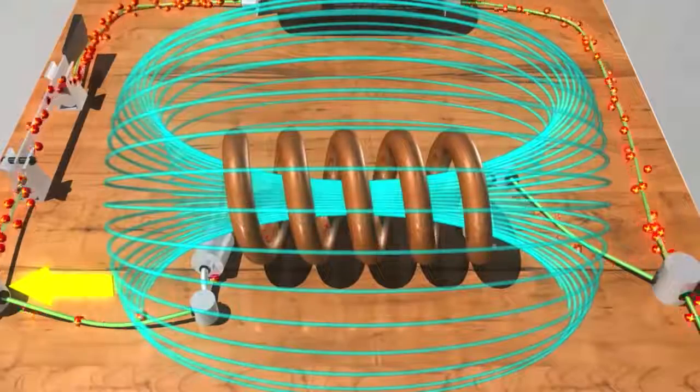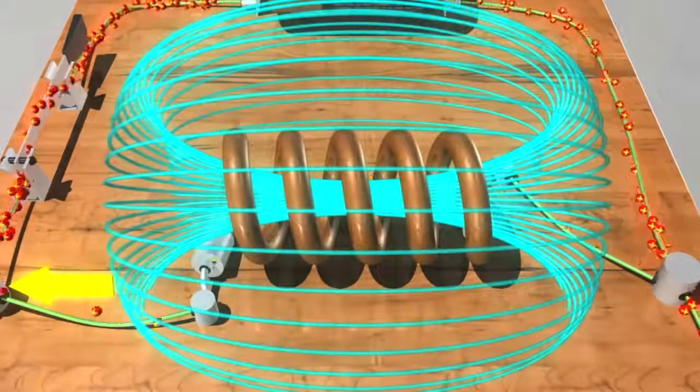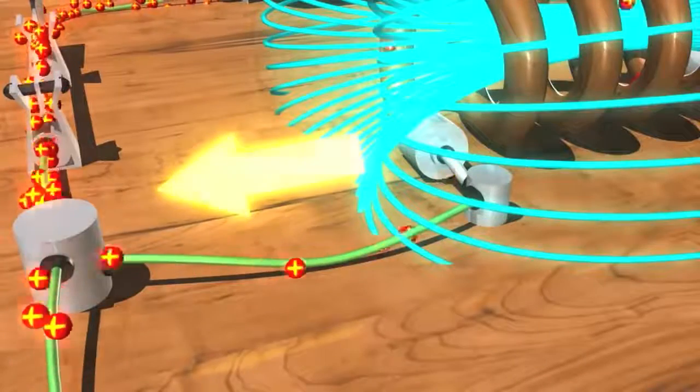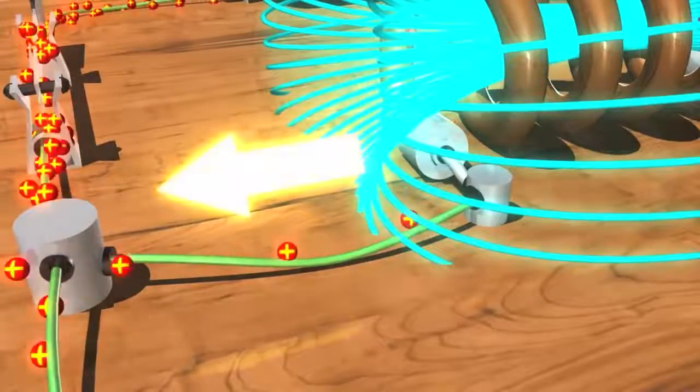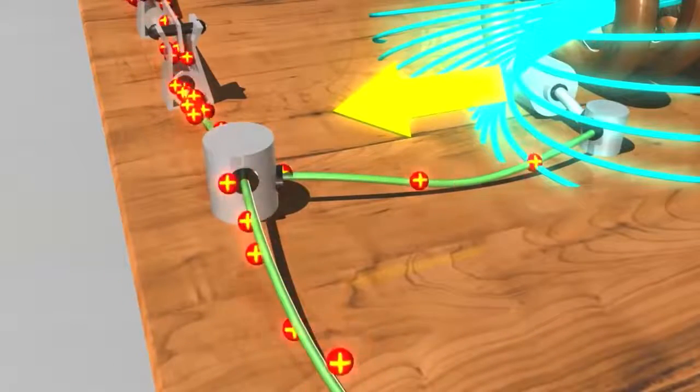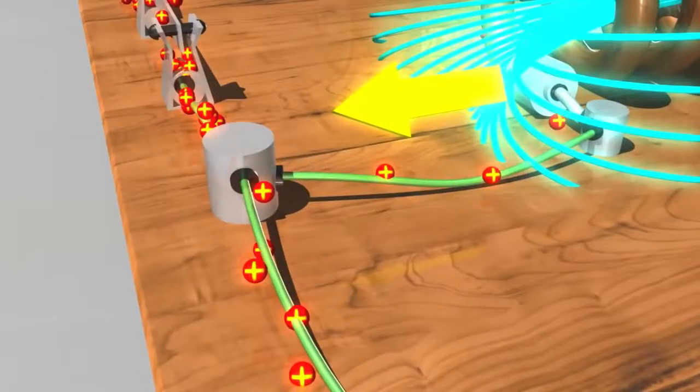So the inductor here is creating a back EMF represented by this yellow arrow. Back EMF always opposes the change that created it. So in this instance, the back EMF is opposing the change created by turning on the circuit. It opposes the current.